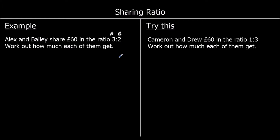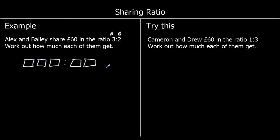So we're going to say that Alex is getting three parts, so I'm going to draw three boxes. And Bailey's getting two parts, so two boxes. So we can see in total there are five boxes, five parts in total. And we need to split the £60 into these five boxes, so we're going to do 60 divided by five.